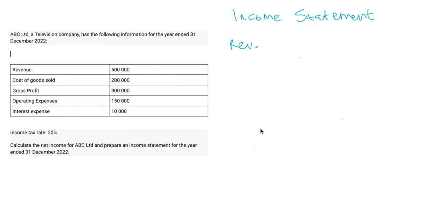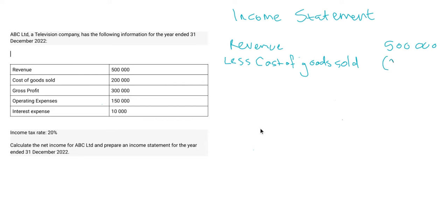So we'll have your revenue or your sales, and then we have less your cost of goods sold. Your revenue is $500,000 and then your cost of goods sold is $200,000, and with that we get your gross profit, which is $300,000.